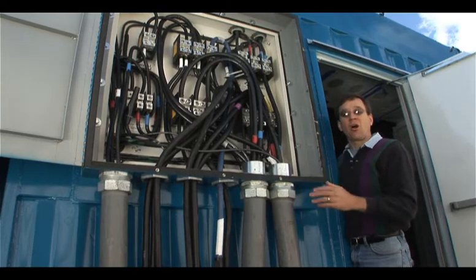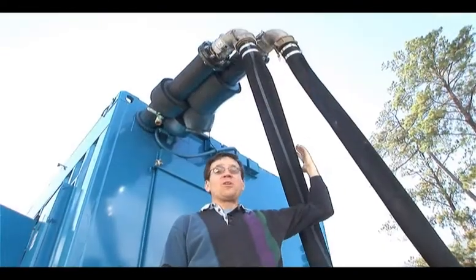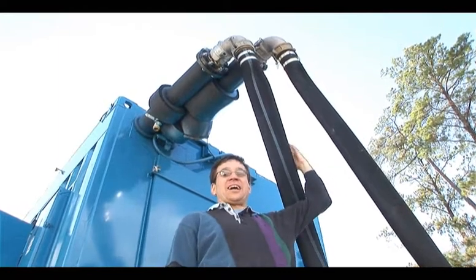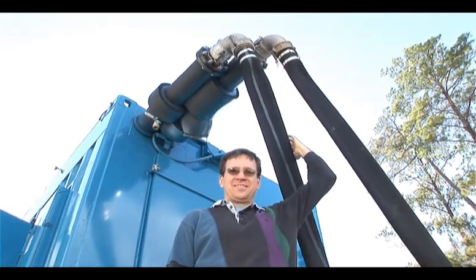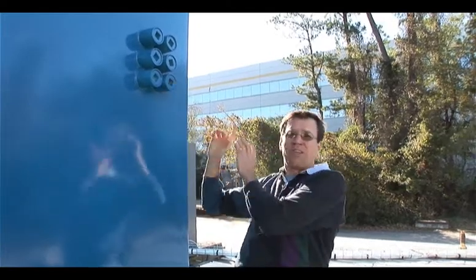In the HP Pod, all the facility level power comes in right here. The cooling for all that power goes in and out of the Pod and the water lines right here. And we just have these six pass throughs for networking on both ends of the container.